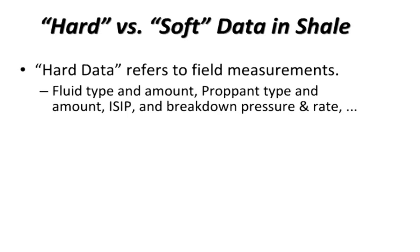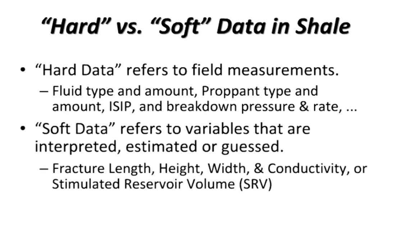What we call hard data are things that we actually measure in the field: fluid type, fluid amount, proppant type, proppant amount, ISIP, breakdown pressure, injection pressure, injection rate. Anything that can be measured is used as data that goes into the system — from how the well is drilled (inclination, azimuth, length, total vertical depth), to reservoir characteristics such as gamma ray, density, resistivity, porosity, TOC, to completion information such as lateral length, distance between stages, number of stages, number of clusters, and number of perforations.